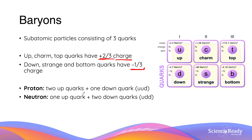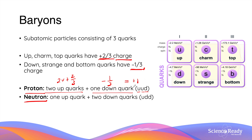It is important to know the quark composition of a proton and a neutron. A proton is made of two up quarks and one down quark (UUD): two times positive two-thirds plus minus one-third gives a total charge of plus one, explaining the proton's positive charge. A neutron is made of one up quark and two down quarks (UDD): positive two-thirds plus two times minus one-third gives a net charge of zero, explaining why neutrons have no charge.